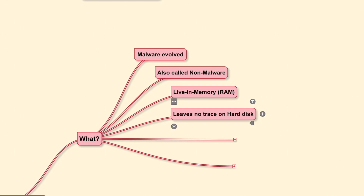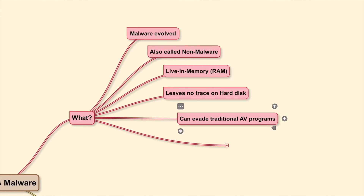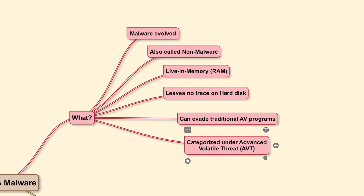It leaves no trace on the hard disk, or in some cases the code exists but is shrouded underneath a trusted program. Fileless malware can evade traditional antivirus and malware programs because the signature-based technique requires the payload or malicious code to exist in a file. It is categorized under the Advanced Volatile Threat group, AVT. This group includes threats initiated from volatile memory — the RAM — and will remove traces of existence when done.